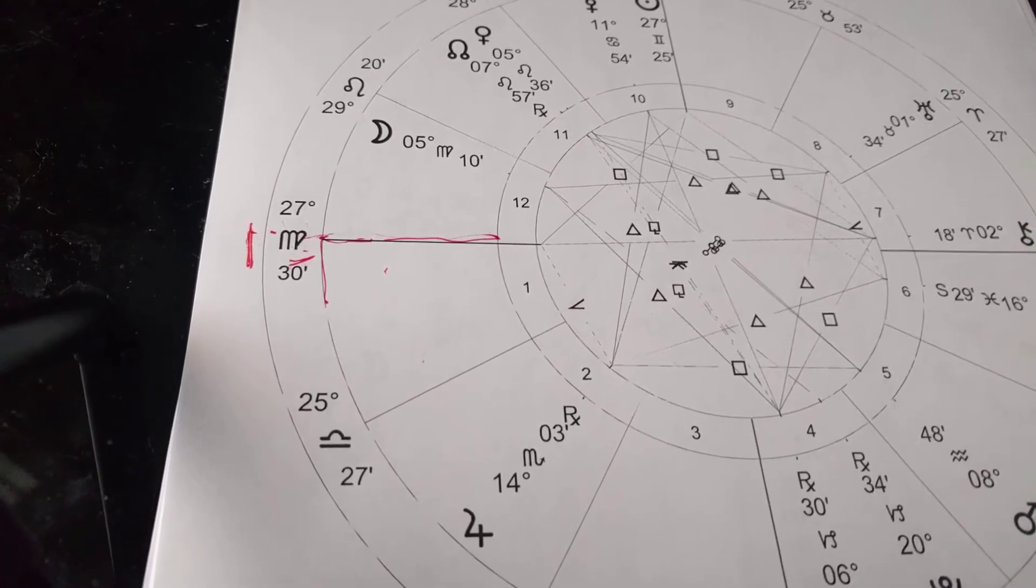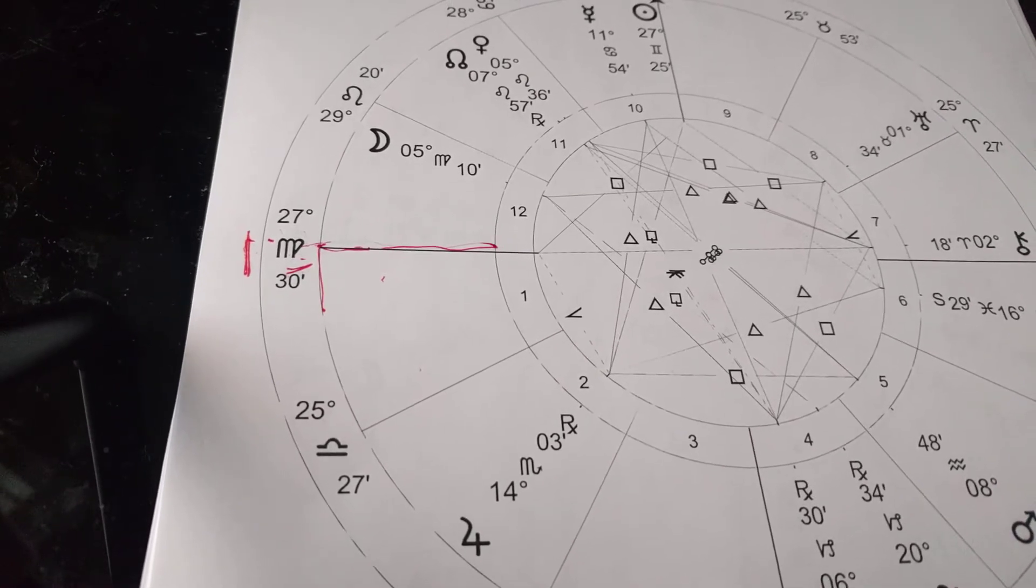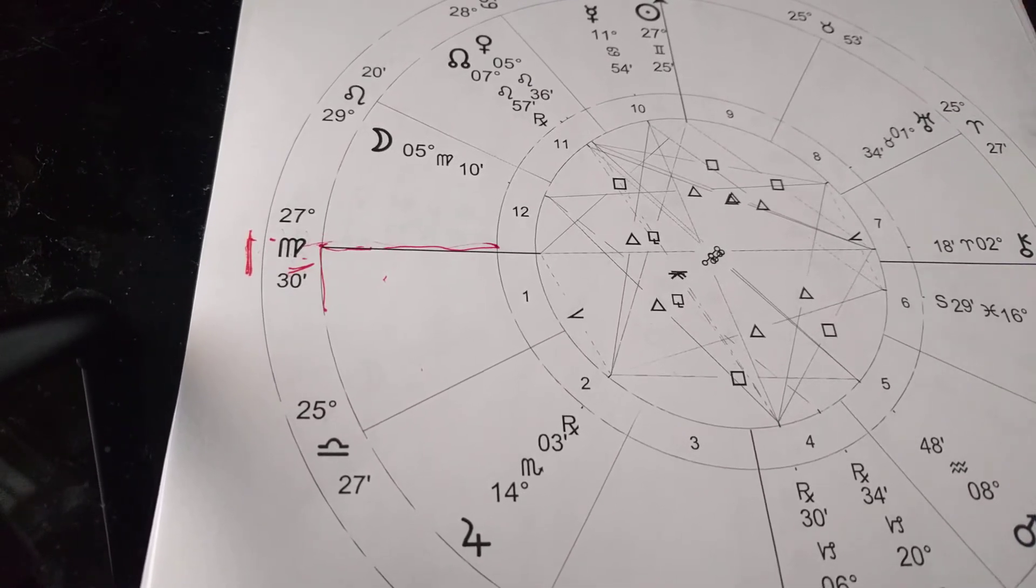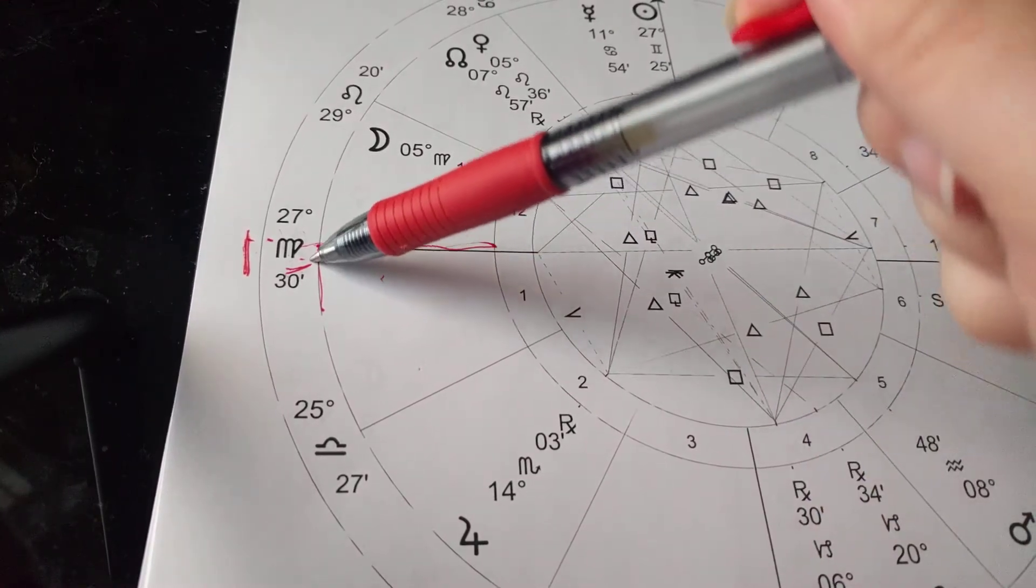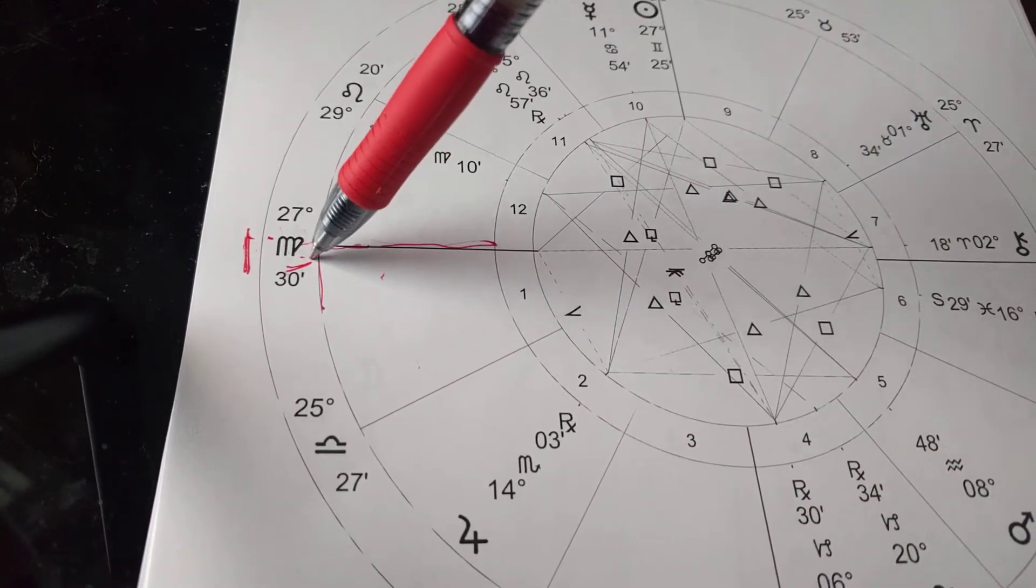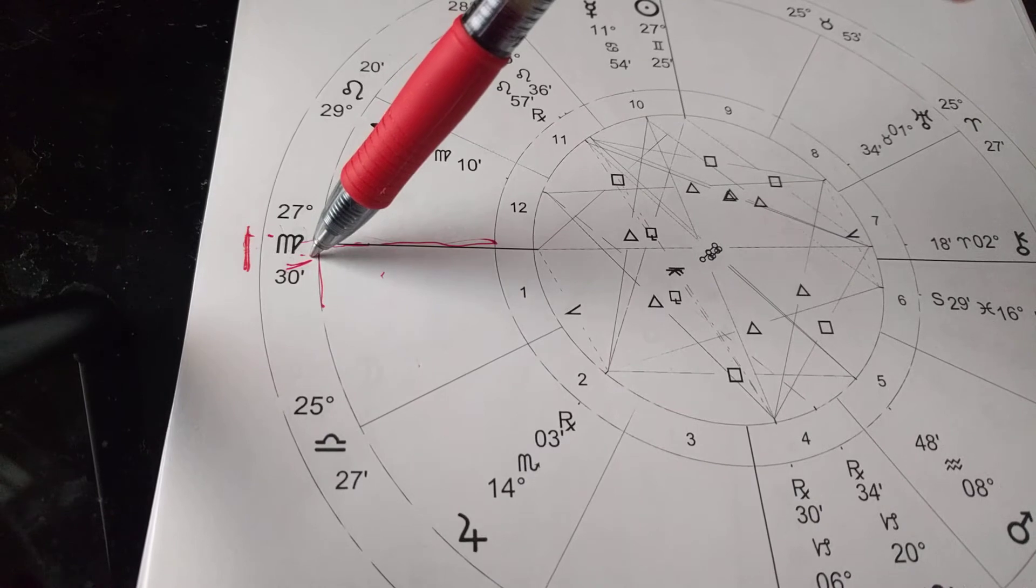Also someone who comes across as being healthy and conscious of their daily lifestyle. Virgo is okay with saying no to choices, to decisions, and being very discerning.